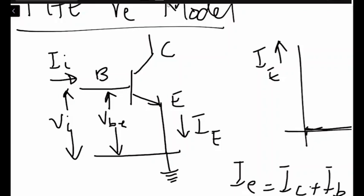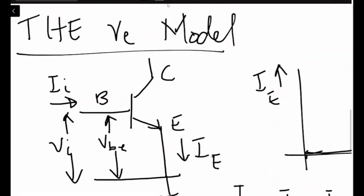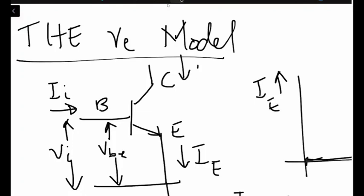The current flowing in the emitter leg is ie, so the current flowing in the collector leg should be equal to ic. In between base and emitter, the transistor is behaving as a diode. With this, the input characteristic waveform can you see it.